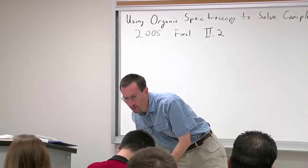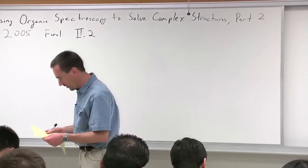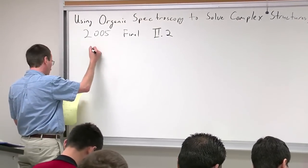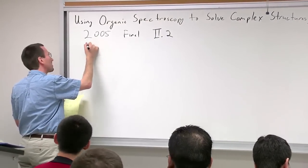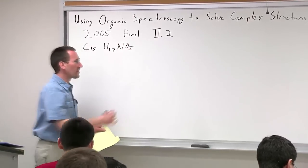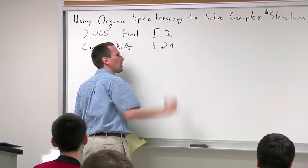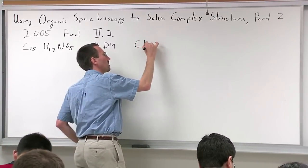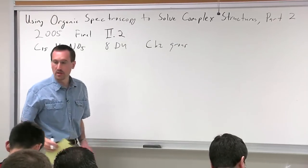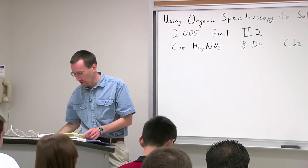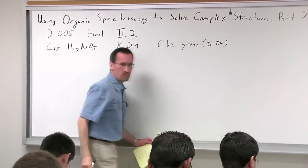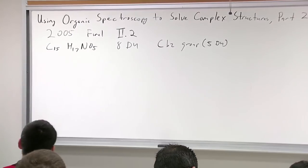It's a challenging problem and I think it has depth, so even if you've gotten it, I hope you'll appreciate the additional perspective. The basic inspection: we have a molecular formula of C15H17NO5, which means you have 8 degrees of unsaturation. We know there's a CBZ group in there, so the CBZ group can account for five of them — that's 5 DU — and it's pretty obvious once you see the CBZ group. So we still have a couple of other things going on.